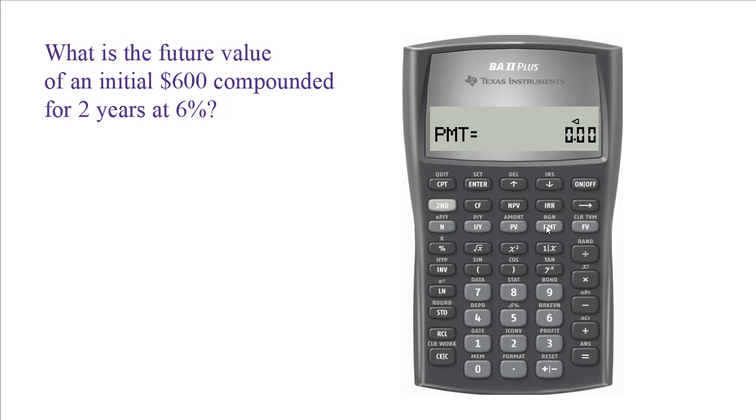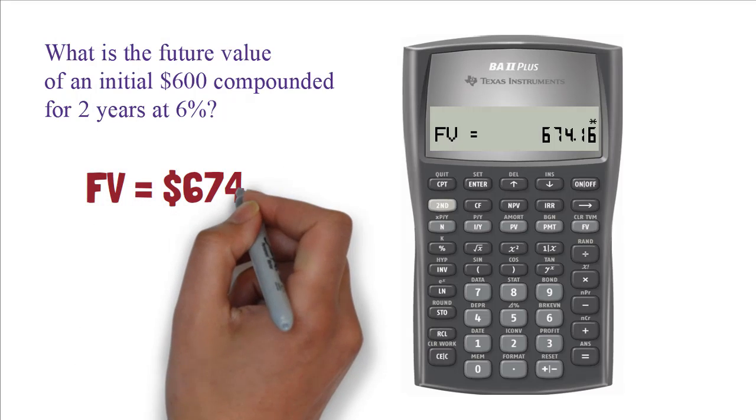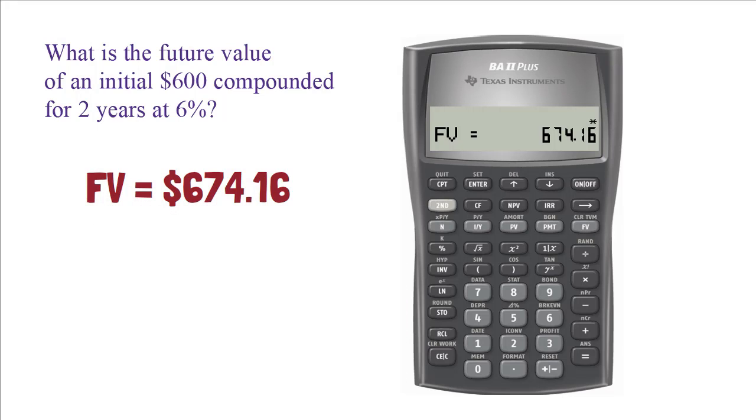Once you are done with entering all the values except FV, press CPT and then press FV. So you get FV equals 674.16.